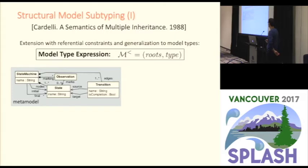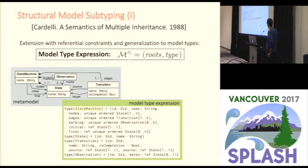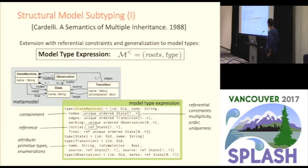To illustrate what a model type expression looks like: here we have a metamodel, and this is the type expression for it — the model type expression that defines the object type for each metaclass in the metamodel. This notation is very similar to what you could get using EMFatic, and in fact the EMFatic tool can generate this textual syntax for metamodels in a very similar way.